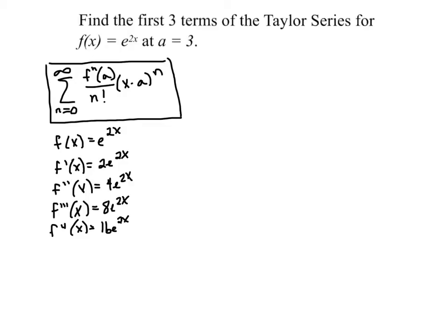So I'll try and write the general term, and that'll help. So this, remember, we evaluate at, in our case, 3. So this is going to be e to the 6th, 2e to the 6th, 4e to the 6th, 8e to the 6th, and 16e to the 6th. And again, we don't need all of these terms.